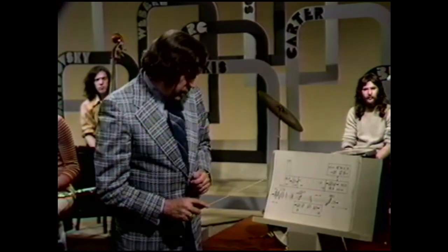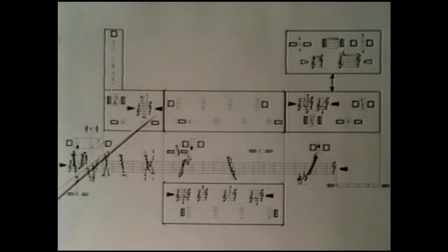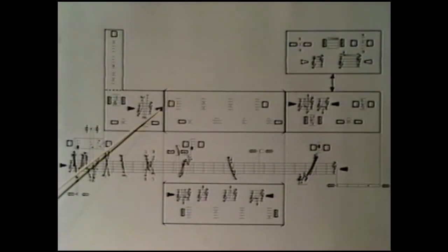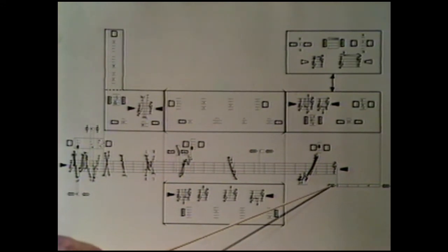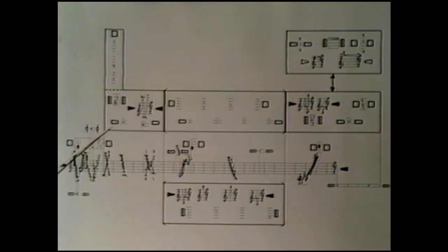Time does not permit the explanation of every symbol on this page, but some of the more prominent ones indicate the marimba — this black one — or this refers to sleigh bells, and this indicates a tom-tom, and here we have a snare drum.